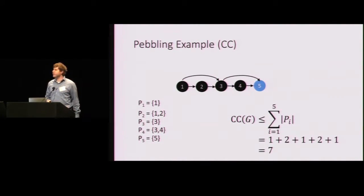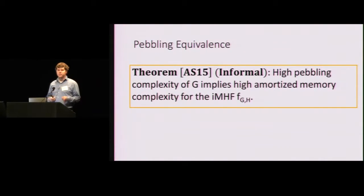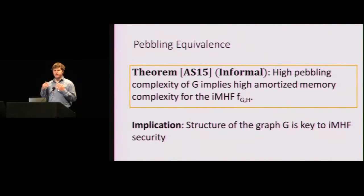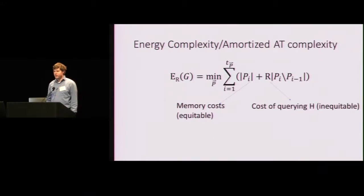All right. So this is a nice metric. How does it work? Well, remember our previous pebbling here? What would the cost of this pebbling be? It's just one plus two plus one plus two plus one, or seven total. Another reason why this notion is nice is because there's a nice equivalence established by Alwyn and Serbenenko again. Informally, and at a very high level, high pebbling complexity of G implies that the original memory-hard function has high amortized memory complexity. So it's efficient to just reason about the structure of the underlying graph to think to prove security of the underlying IMHF.